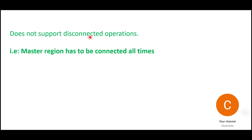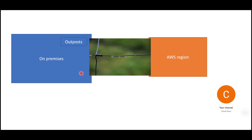This concept is important for three certifications: AWS Solutions Architect Associate SAA-C03, Data Analytics, and Solutions Architect Professional. Your on-premises environment must be connected to the AWS region — and that connection is made through AWS Direct Link.